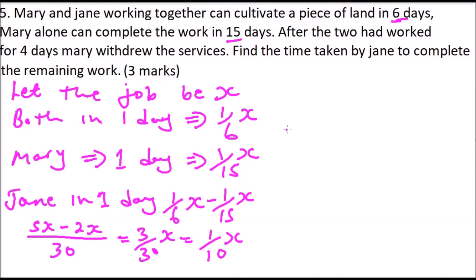Therefore, in four days, it means that they will do 4 multiplied by what they can do in one day, both of them. So this will give you 4 over 6x, which is the same as 2 over 3x. So that is the part of the job they did in four days.